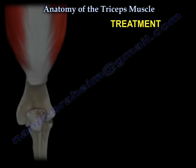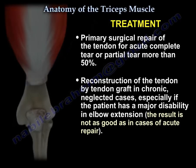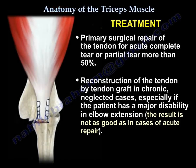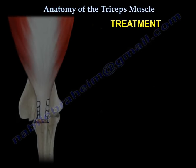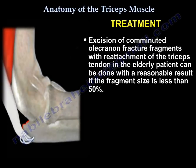Regarding treatment: primary surgical repair of the tendon is indicated for acute complete tear or partial tear of more than 50%. Reconstruction of the tendon by tendon grafts is used in chronic neglected cases, especially if the patient has a major disability in elbow extension, but the result is not as good as in cases of acute repair. Excision of comminuted olecranon fracture fragments with the attachment of the triceps tendon in the elderly can be done with a reasonable result if the fragment size is less than 50%.